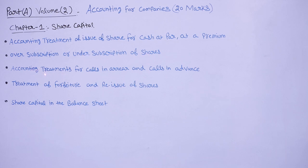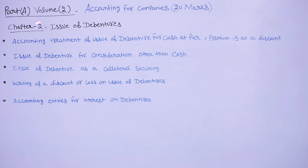You will also learn the accounting treatment for calls in arrears and calls in advance, how to show them in the balance sheet, and the treatment of forfeiture and reissue of shares. Chapter 2 is issue of debentures — you will learn about the issue of debentures for cash at par, at premium, or at a discount.